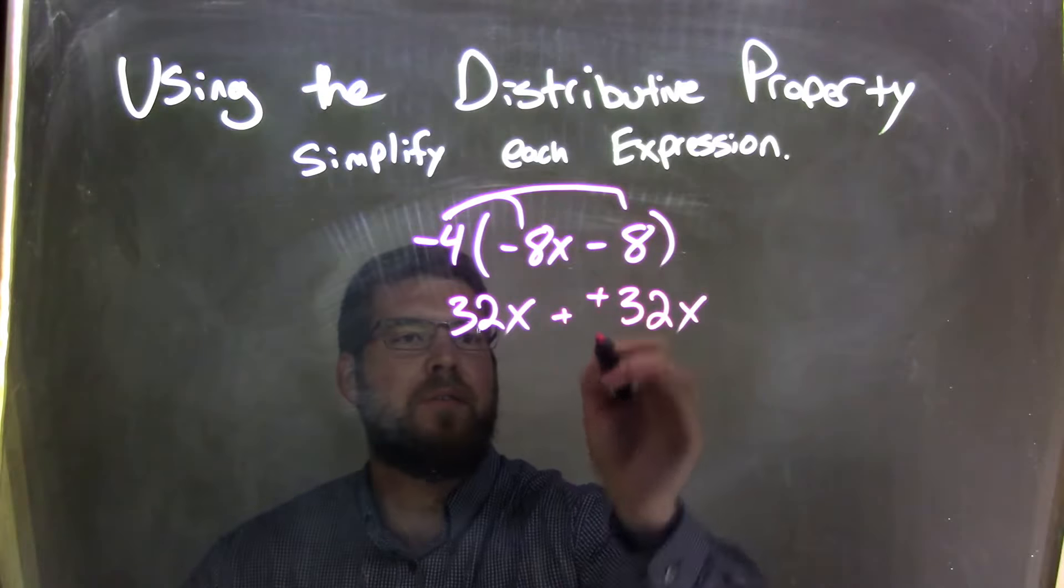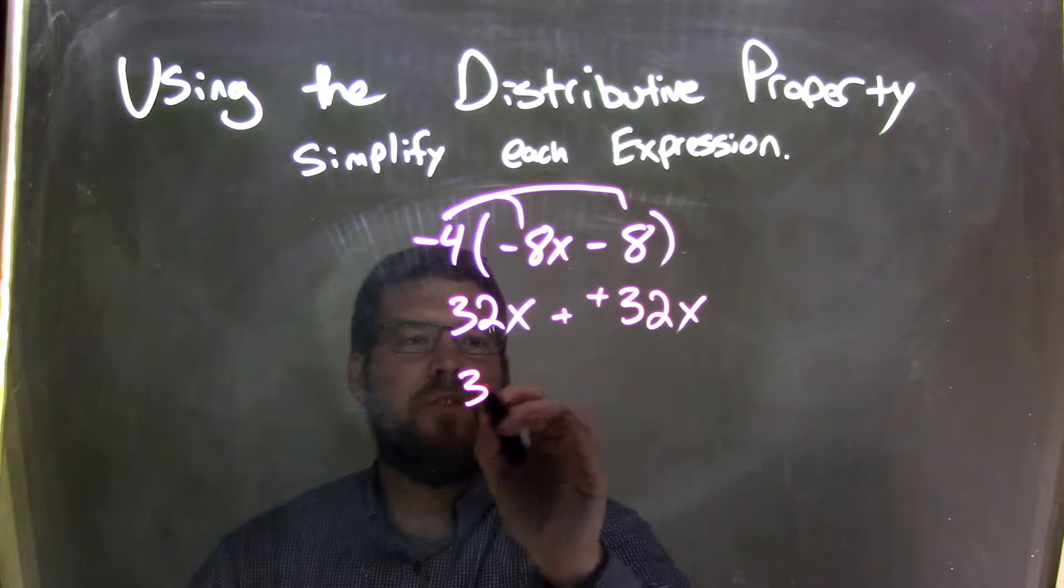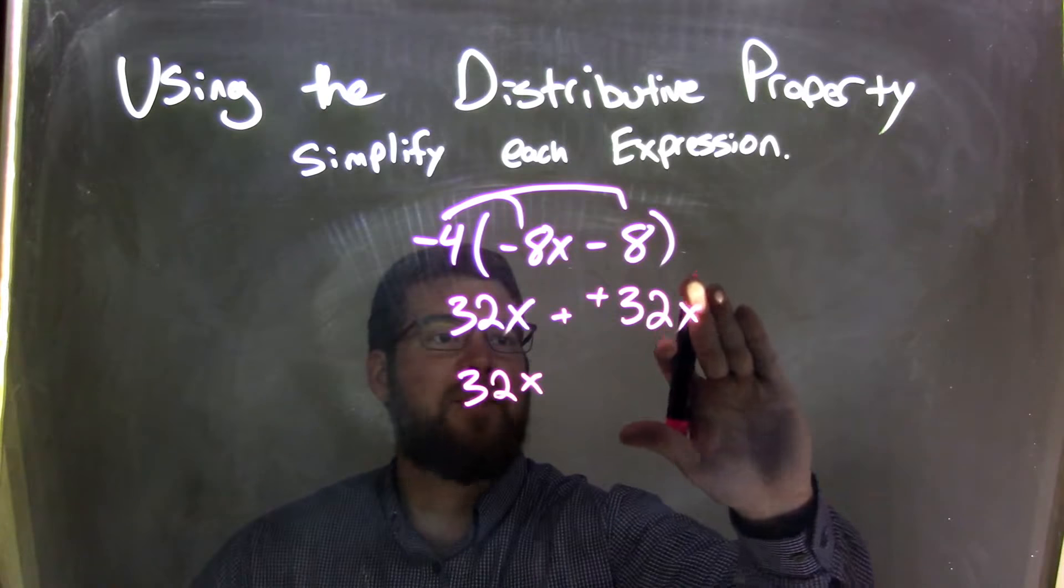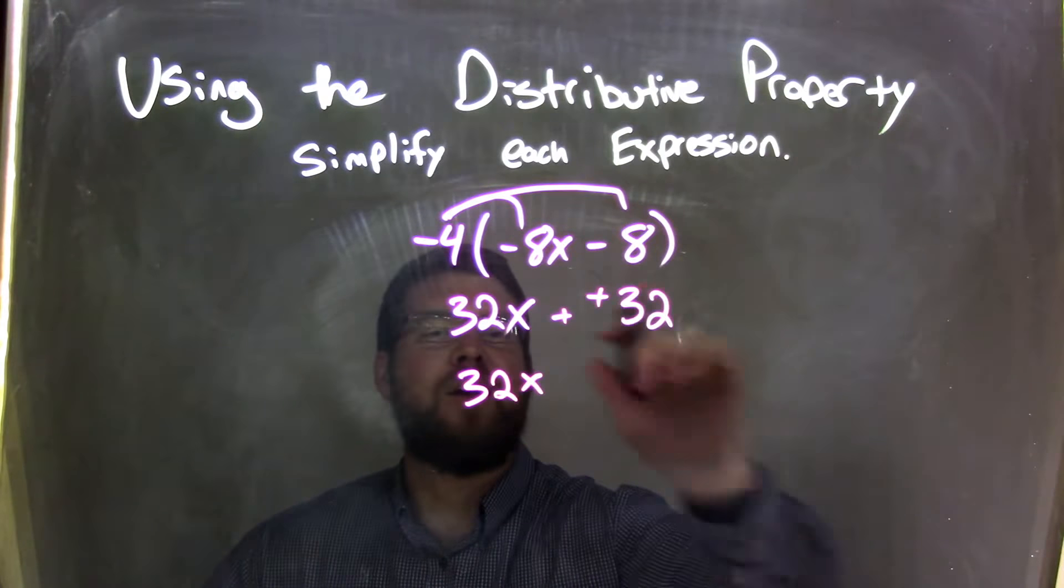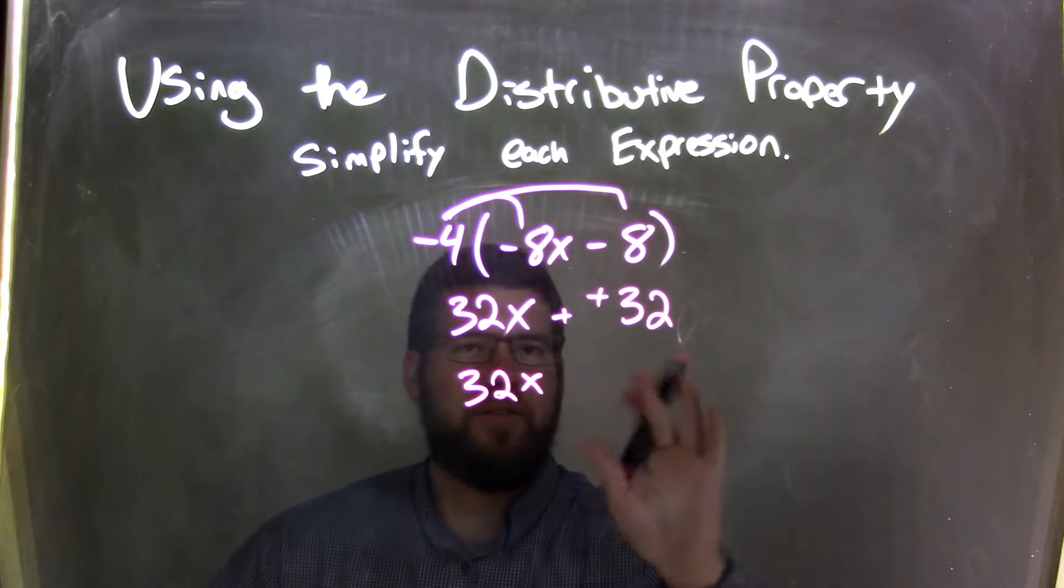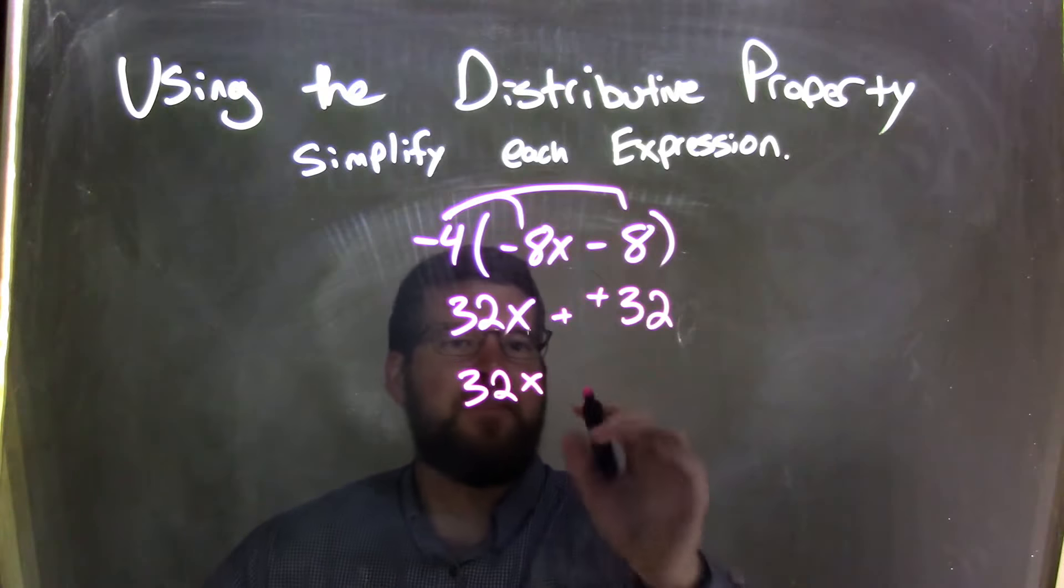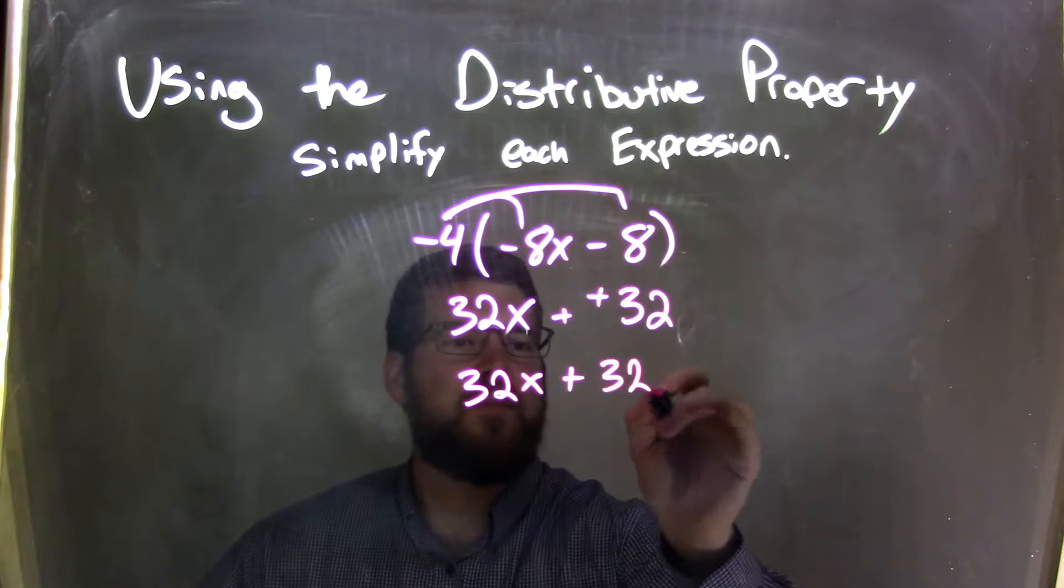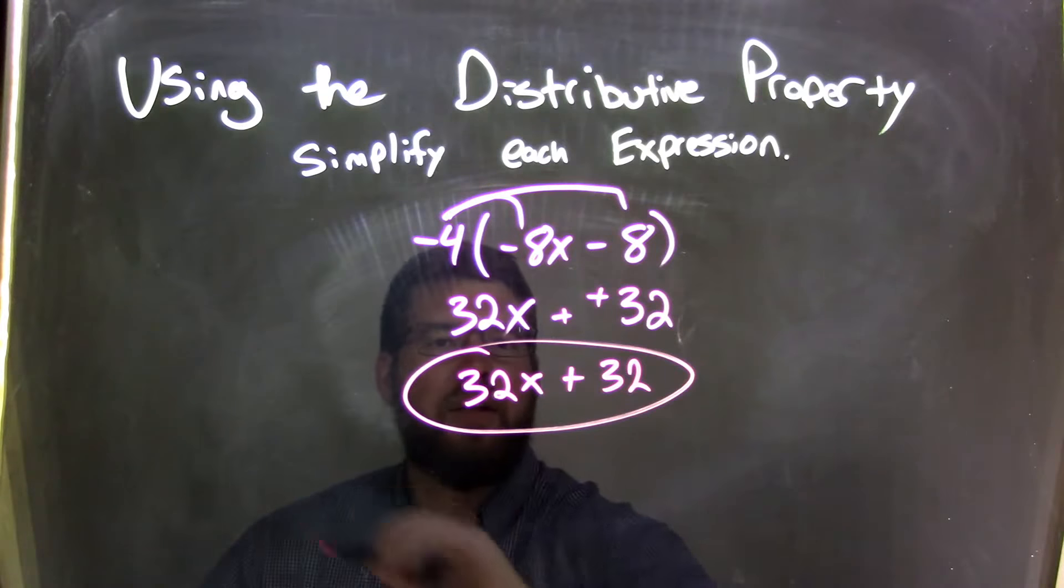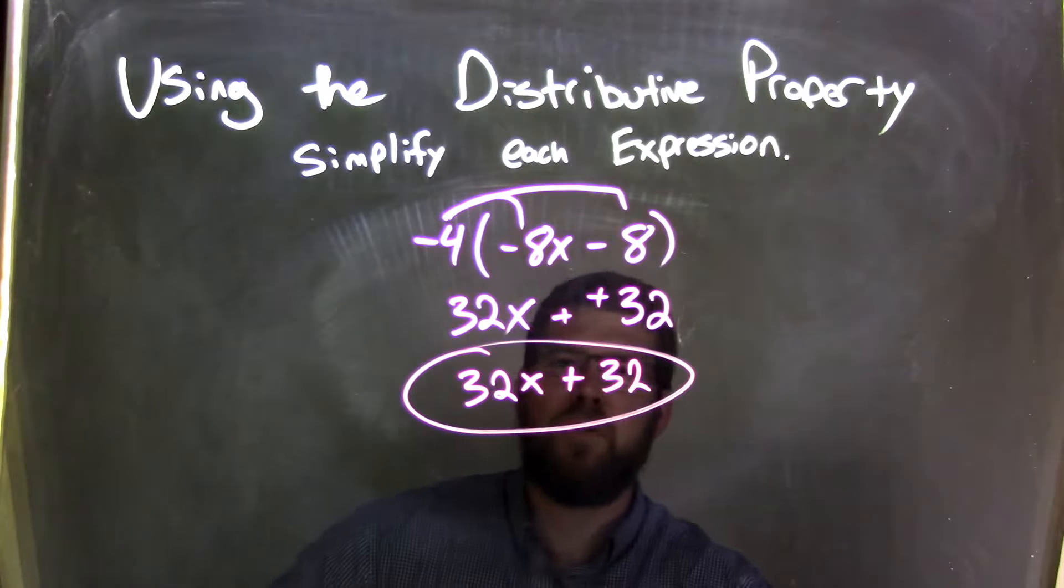So when we simplify this, write it plainly, we have 32x, and this is not an x, it's just 32. Sorry, negative 4 times 8 is negative 32, no x there, plus 32. And now we have our final answer of 32x plus 32.